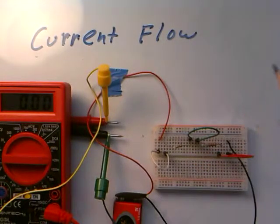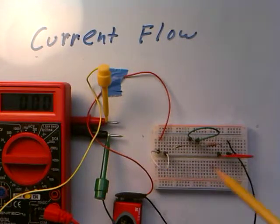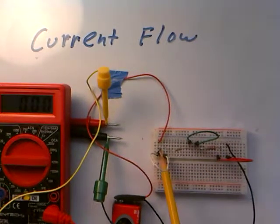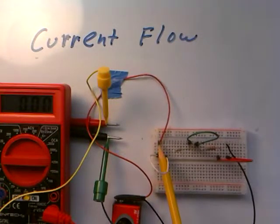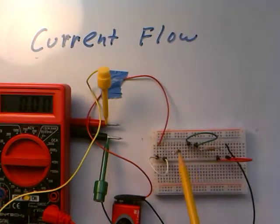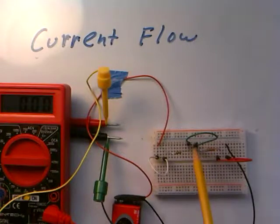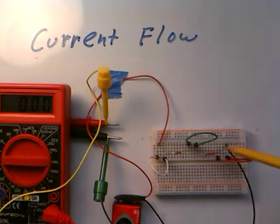But what I'd like to do now is measure the current flowing through this circuit in three different places. Right here as it flows into the very first resistor, right here as it flows out of the first resistor and into the second resistor, then here as it flows out of this resistor and back around to the battery.